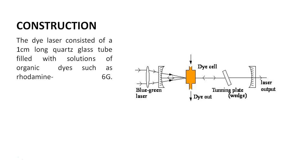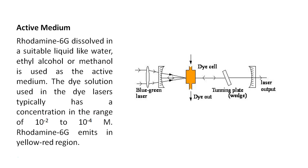The dye laser consists of a 1 cm long quartz glass tube filled with solutions of organic dyes such as Rhodamine 6G. Active medium: Rhodamine 6G dissolved in a suitable liquid like water, ethyl alcohol, or methanol is used as an active medium. The dye solution typically has a concentration in the range of 10⁻² to 10⁻⁴ M. Rhodamine 6G emits in the yellow-red region.